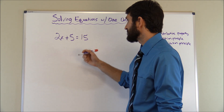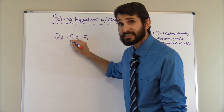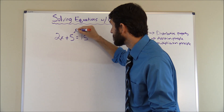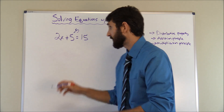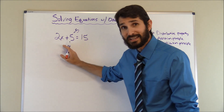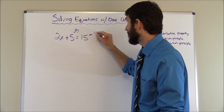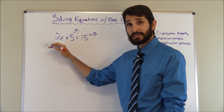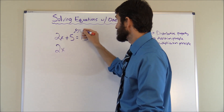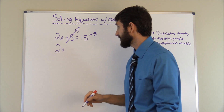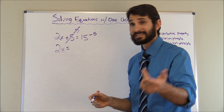So we have two X plus five. We're going to apply the addition principle: since that's a plus five, we're going to say minus five to cancel it out. We take five away and have nothing on this side. But what we do to one side, we've got to do to the other side — so minus five here as well. Now we carry the problem down: two X, the plus five canceled out, equals 15 minus five, which is 10.